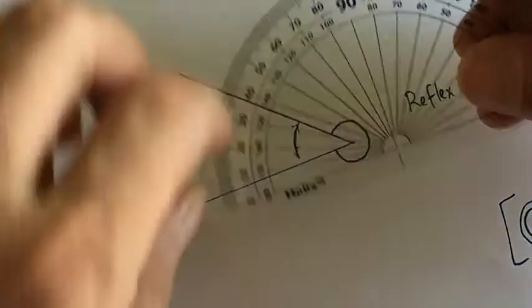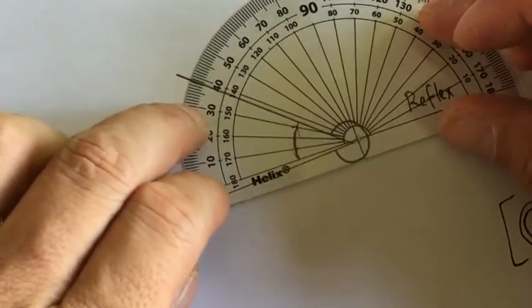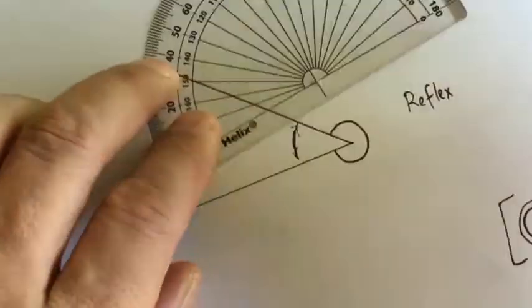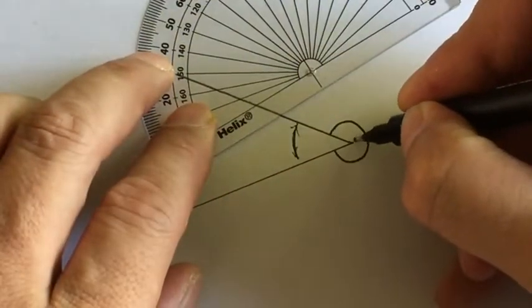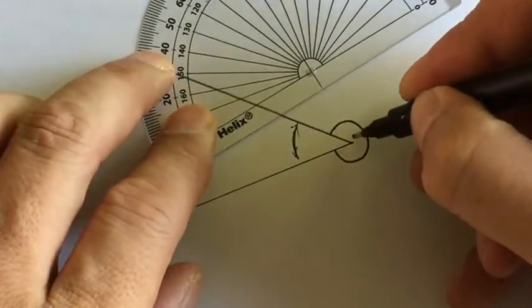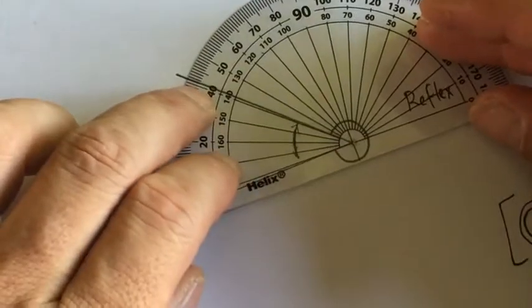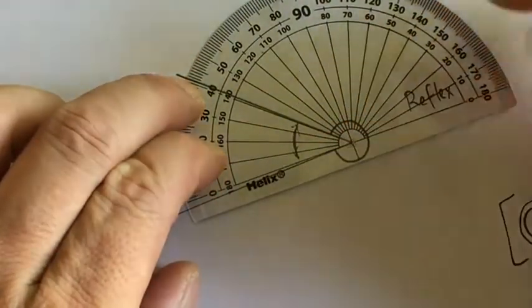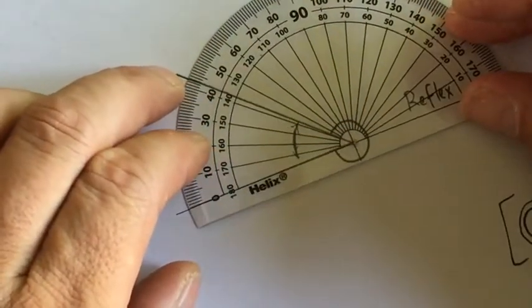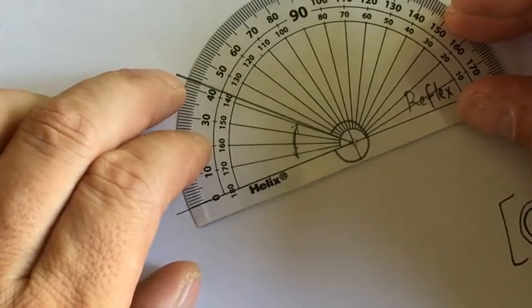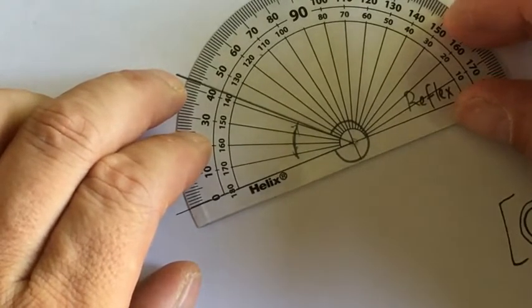Take the protractor and put the crosshairs as accurately as we can on that point. We put this baseline of the protractor on one of the arms of the angle.